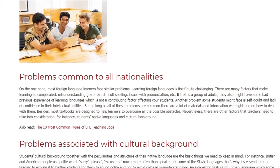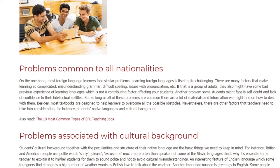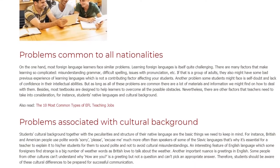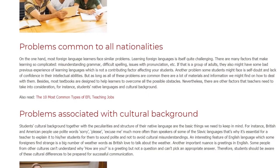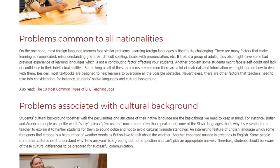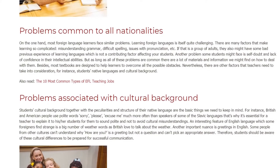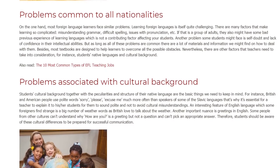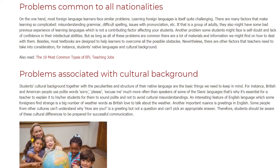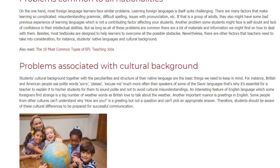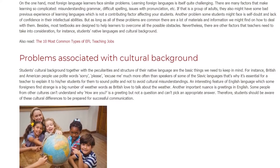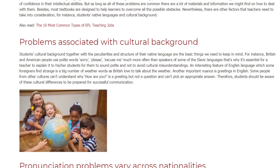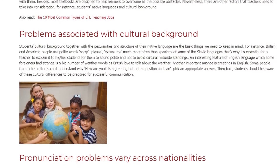Problems associated with cultural background. Students' cultural background, together with the peculiarities and structure of their native language, are the basic things we need to keep in mind. For instance, British and American people use polite words — sorry, please, excuse me — much more often than speakers of some of the Slavic languages. That's why it's essential for a teacher to explain this to students so they sound polite and avoid cultural misunderstandings. An interesting feature of English is the big number of weather words, as British people love to talk about the weather. Another important nuance is greetings in English — some people from other cultures can't understand why 'How are you?' is a greeting and not a question, and can't pick an appropriate answer. Therefore, students should be aware of these cultural differences to be prepared for successful communication.